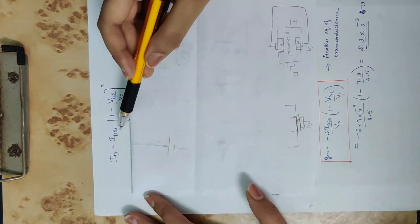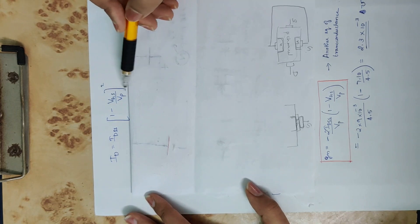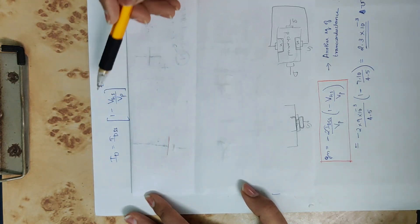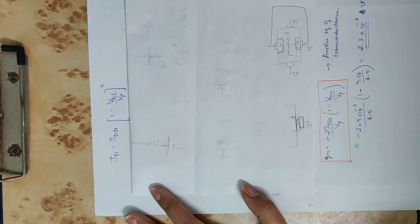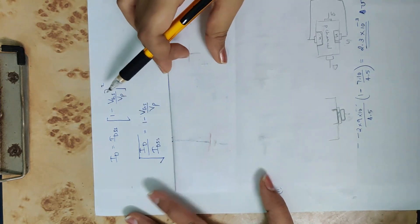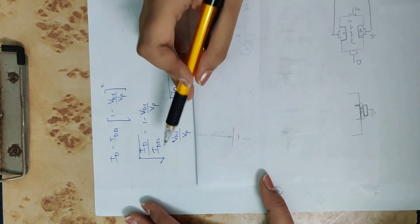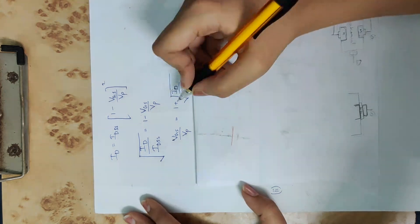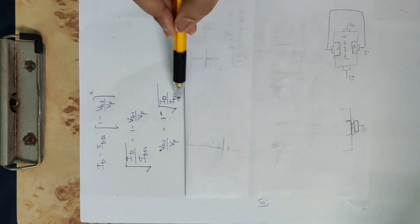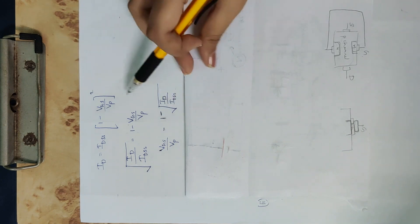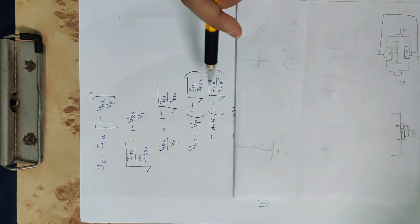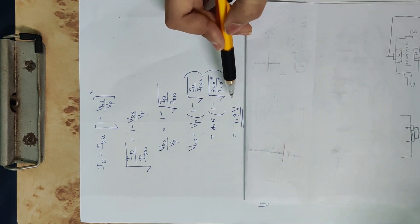Using the drain current equation: ID = IDSS × (1 − VGS/VP)². Rearranging for VGS: VGS = VP × (1 − √(ID/IDSS)). Substituting the values, VGS is calculated to be approximately −1.9 volts.